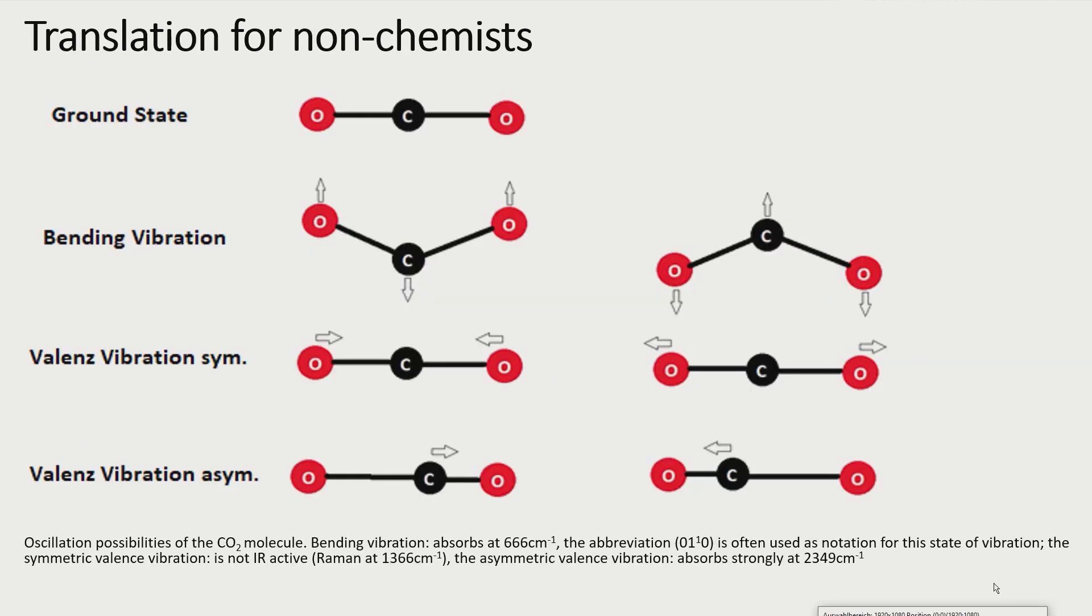CO2 is a rod-shaped molecule, in which a carbon atom is bonded to two oxygen atoms. To understand the vibrational behavior of CO2, the bonds between the atoms can be thought of as similar to spiral springs.